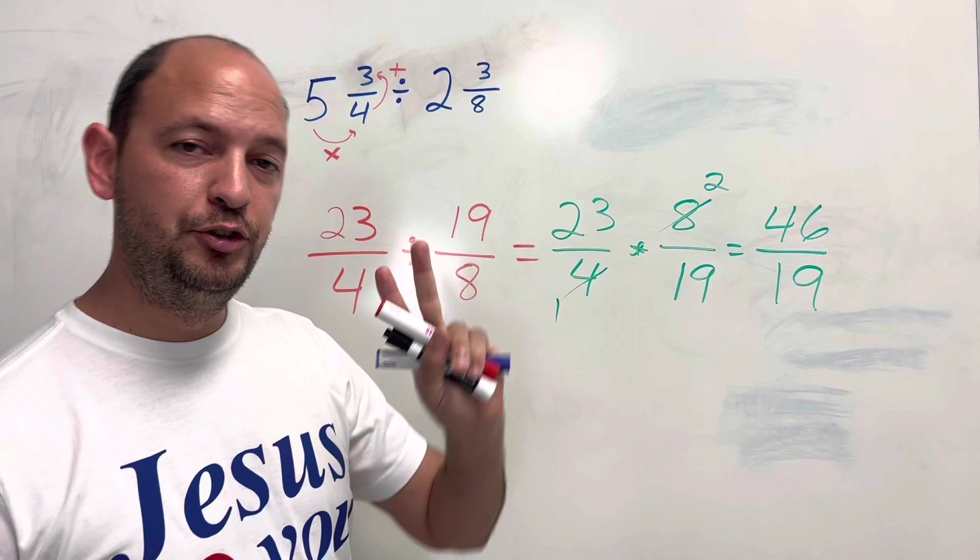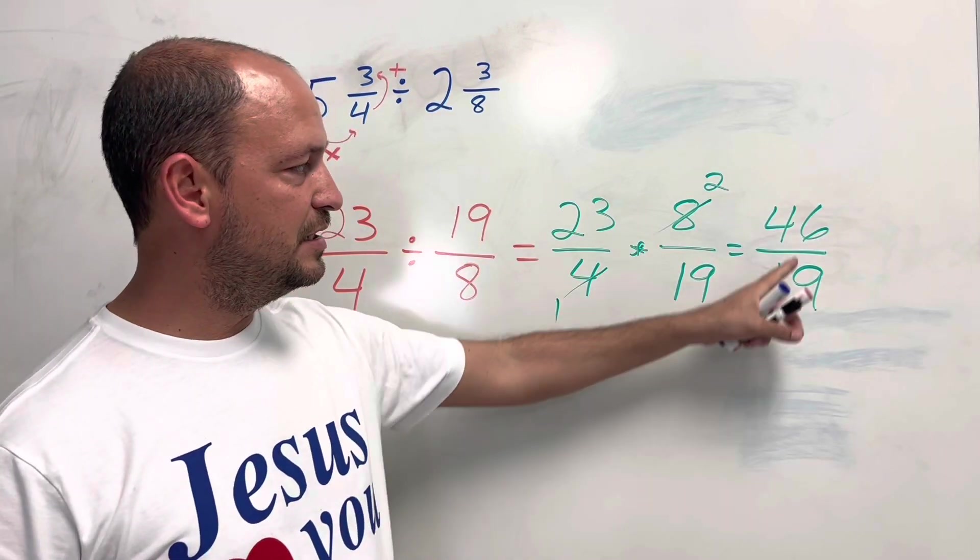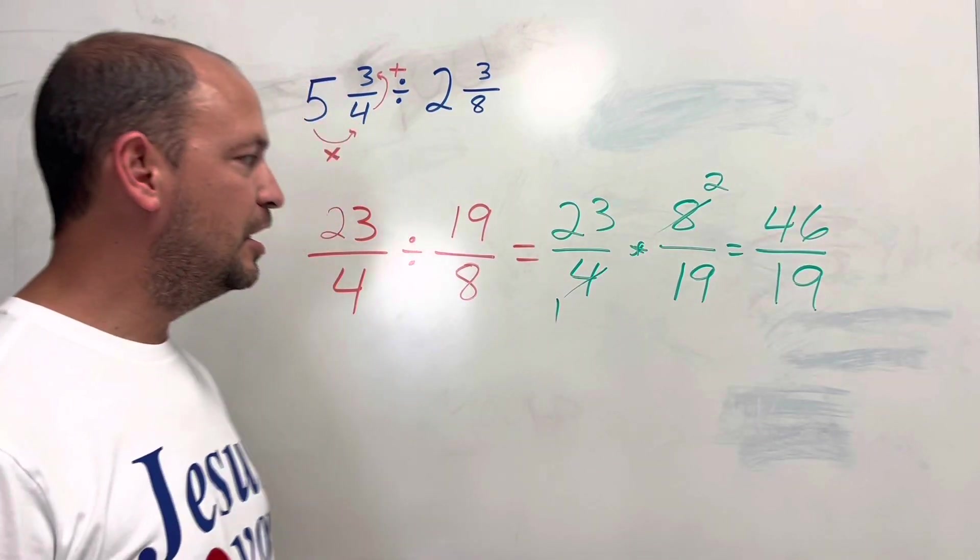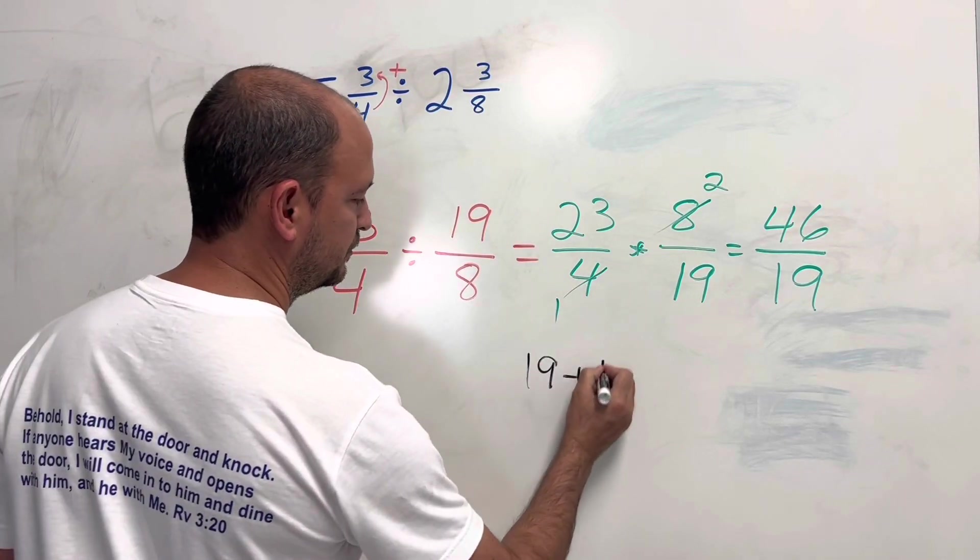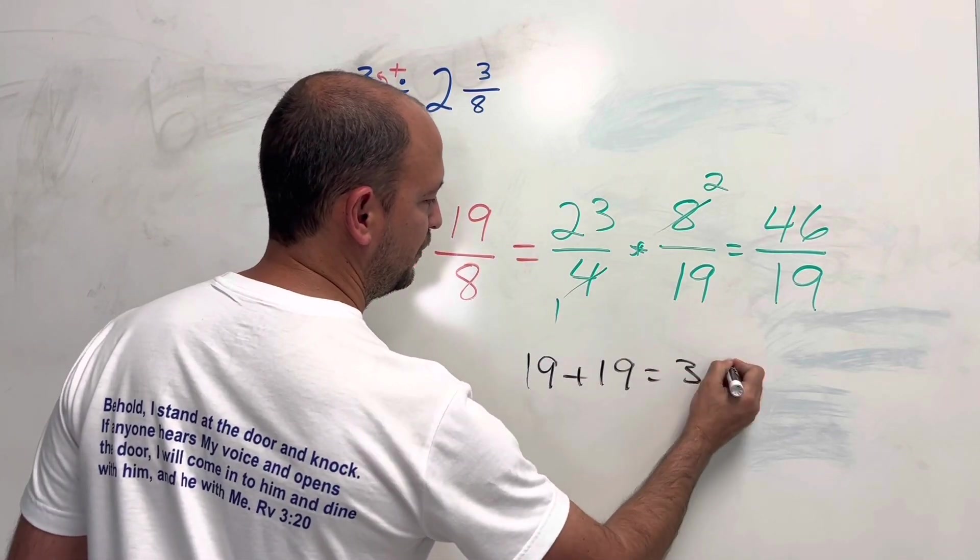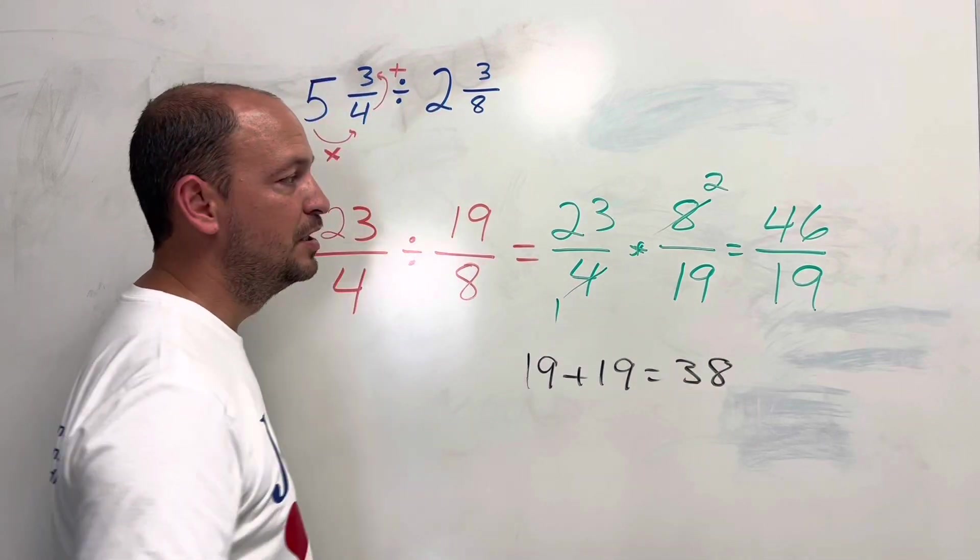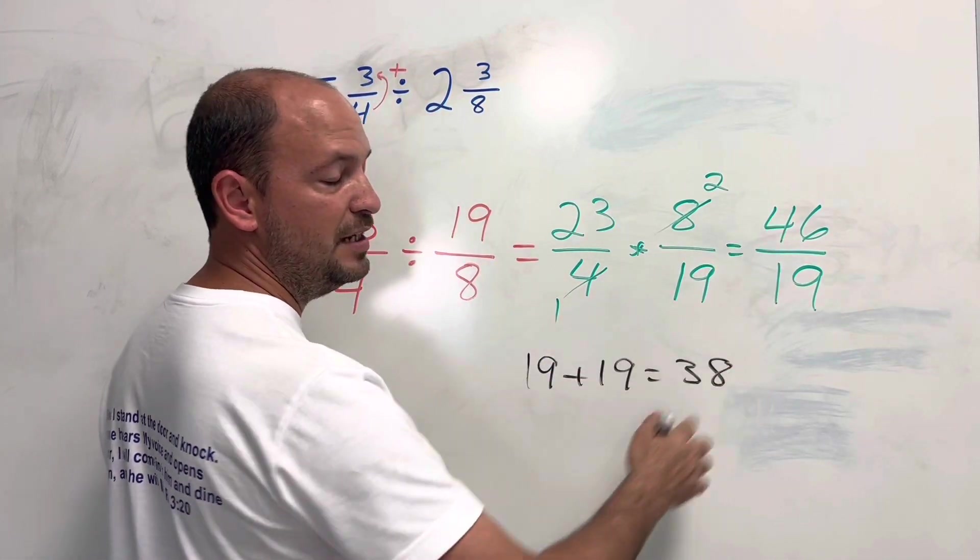There are 2 19's on the 46, because 19 plus 19 is equal 38. So 46 minus 38 is 8.